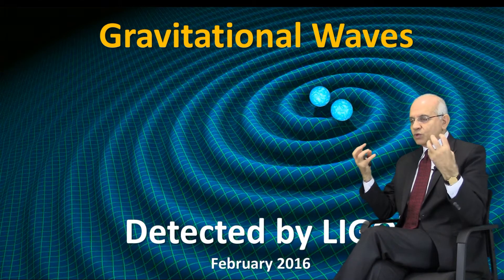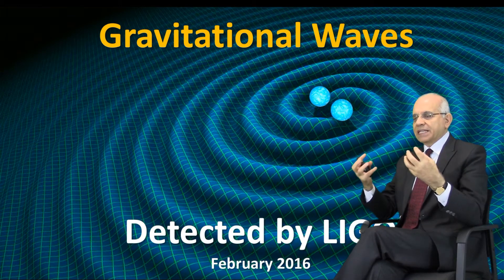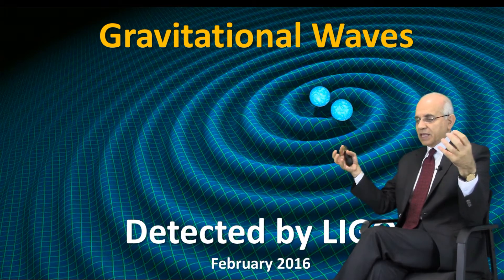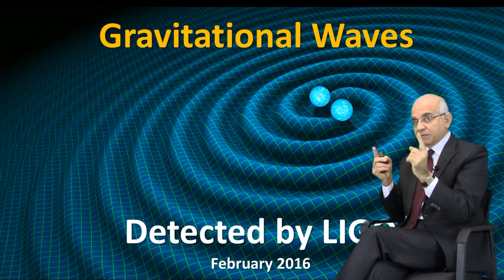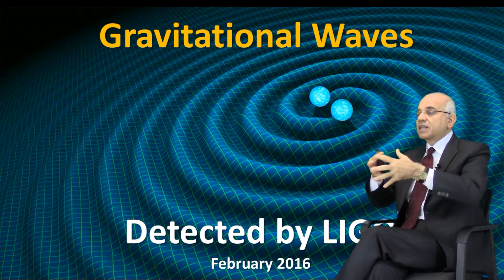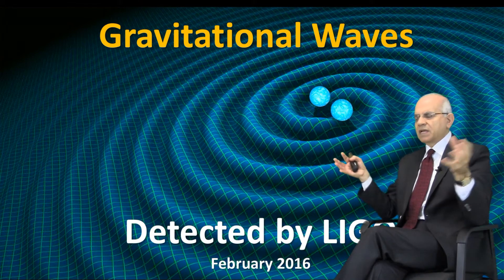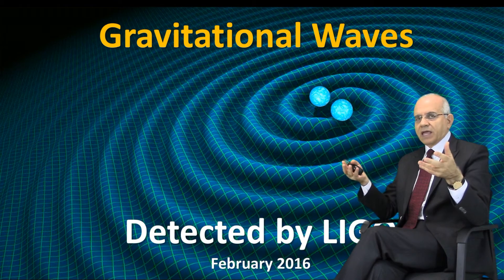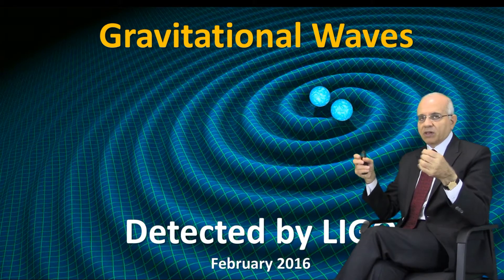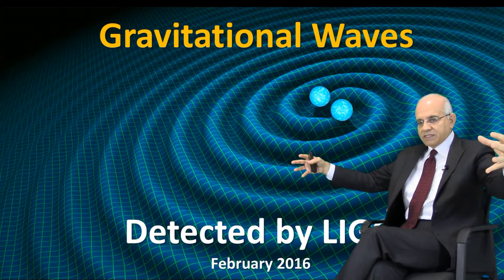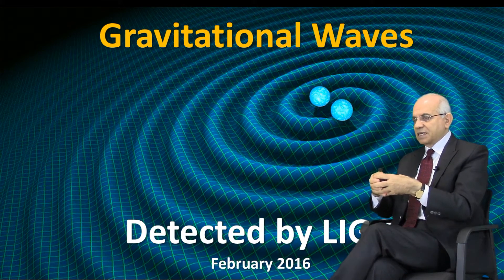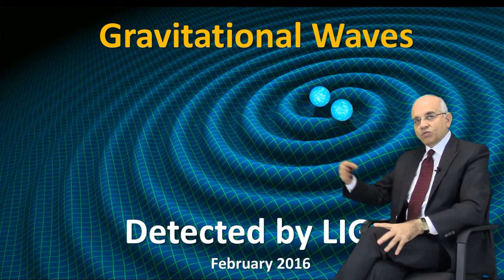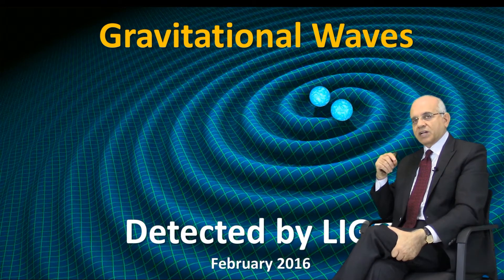If you have two extremely dense and heavy objects in space, like two neutron stars, and they collide with each other or orbit around the center of mass between them, they create huge waves — like the waves you see in a lake or in the sea when you drop a pebble. Space is disrupted or distorted into waves, and these are called gravitational waves.